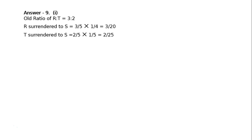T's share was 2/5. Surrendered one-fifth, meaning multiply: that is equal to 2/25. So R surrendered 3/20 and T surrendered 2/25.